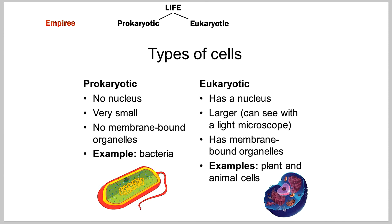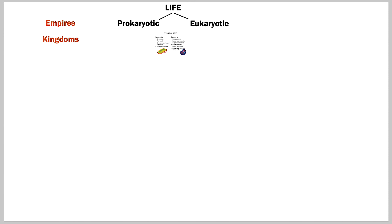In the eukaryotic section we have all the more advanced organisms. These cells have a nucleus, they're larger, and they have membrane-bound organelles. Examples include plant cells and animal cells, and we're going to focus into this area.